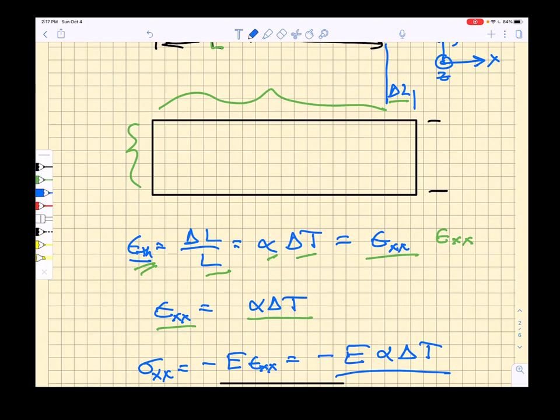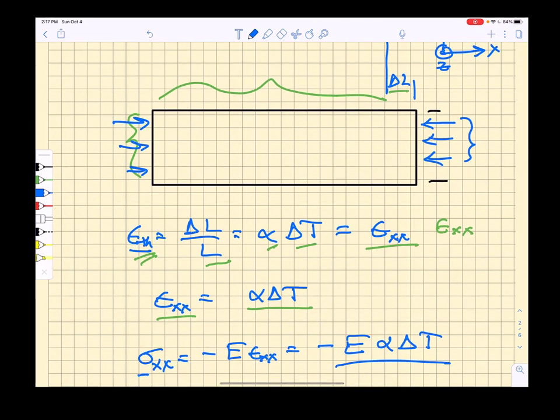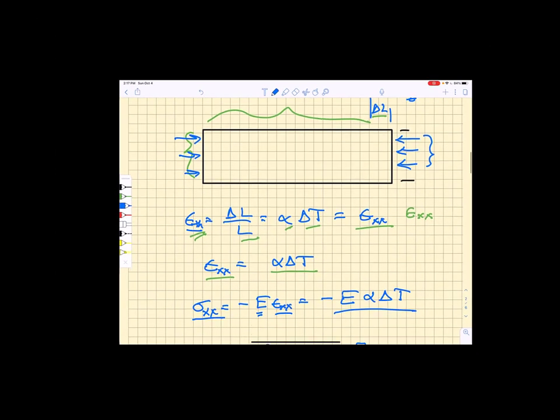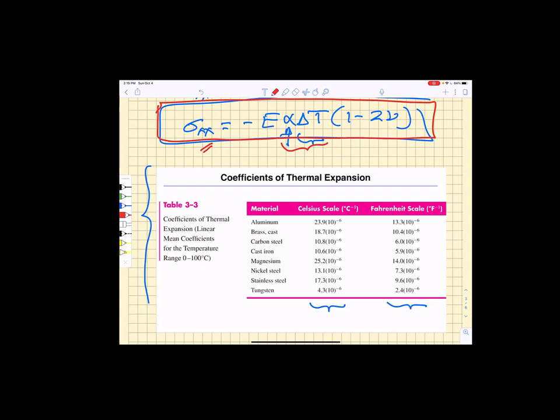If we constrained the bar so that we didn't allow it to grow in length or if you imagine we push it back to its original length, what magnitude stress is required to push it back to its original length? Well the magnitude of that stress would simply be the elastic modulus times the thermal strain which gives us this equation right here. The amount of stress to keep it in its original dimensions when exposed to a temperature change delta T is compressive, there's the negative sign, and it's minus E times alpha delta T. Table 3.3 lists coefficients of thermal expansion both using Celsius and Fahrenheit temperature measurements.